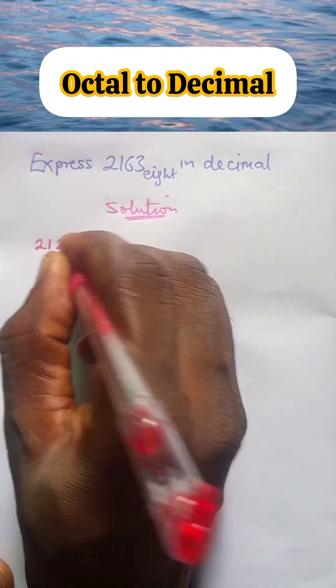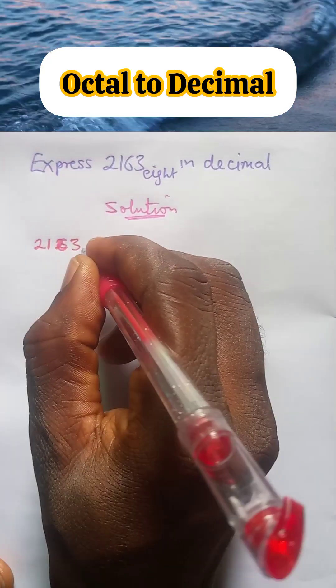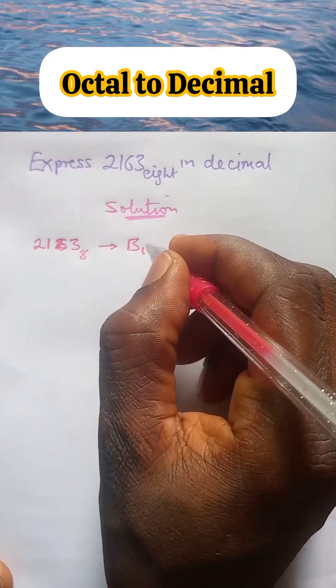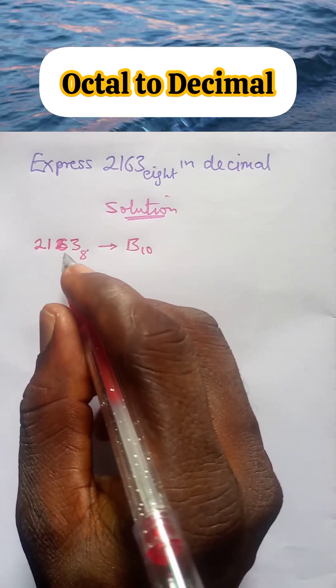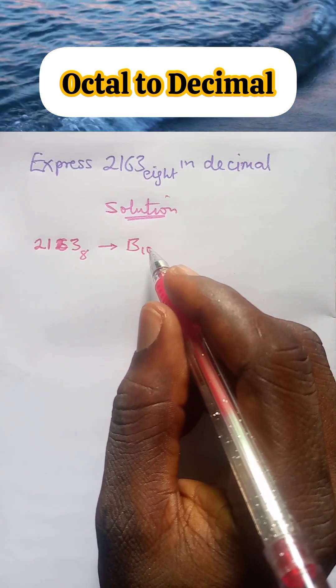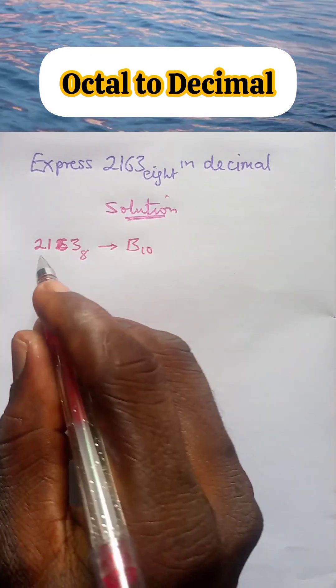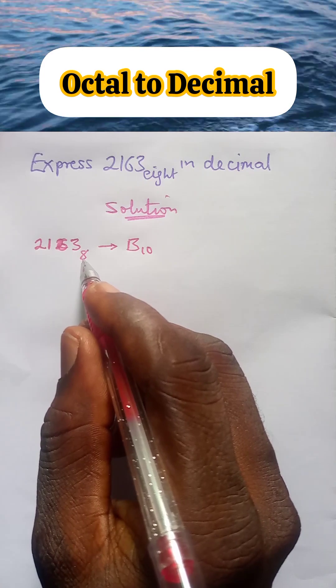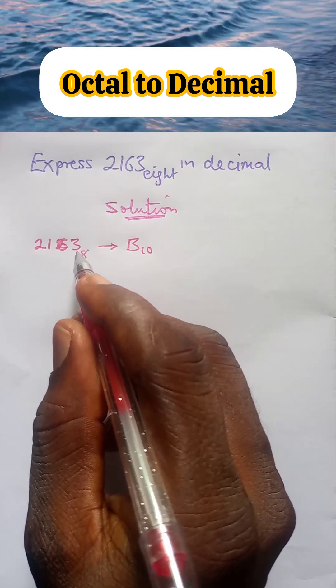We have 2163 base 8 to be converted to base 10. In converting a number from any other base to base 10, we use the expansion method. In other words, we use each digit of the number to multiply the base raised to the power of the number of digits left.